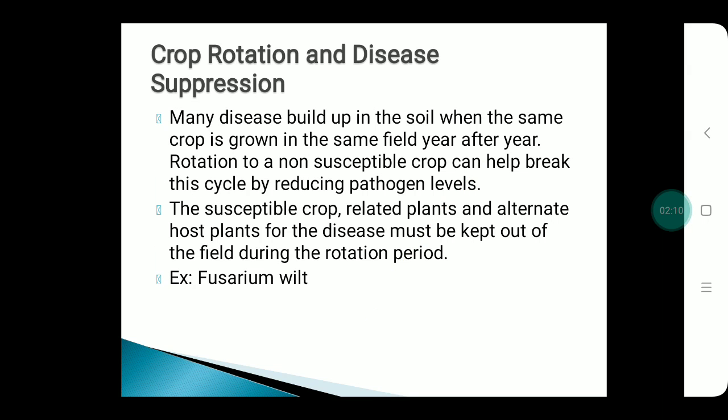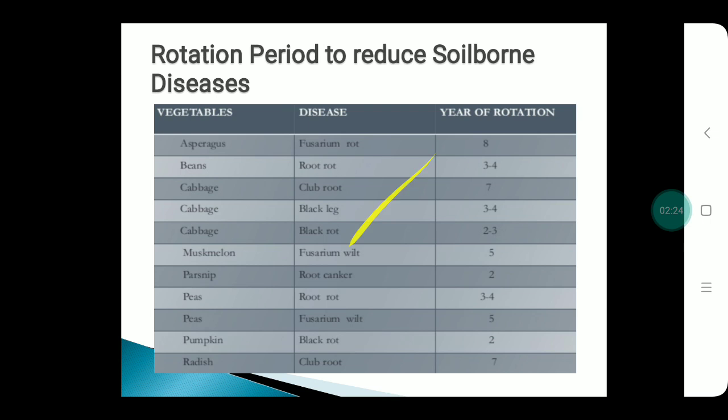Crop rotation and disease suppression: if the same crop is grown repeatedly in the same field, it poses a major threat of disease. Therefore, crop rotation is important to break the cycle. For example, it helps manage Fusarium wilt.